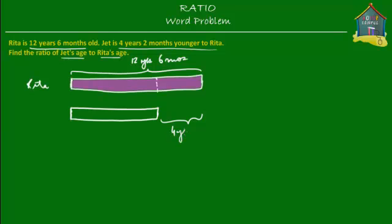This is 4 years and 2 months. Then this is Jet's age which is, let's see how much is Jet's age. Well, 6 months minus 2 months is 4 months, and 12 years minus 4 years is 8 years. So Jet is 8 years and 4 months old.